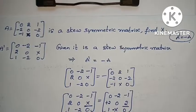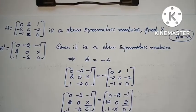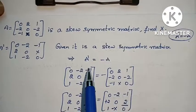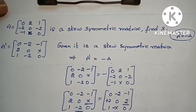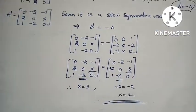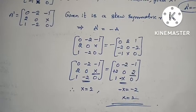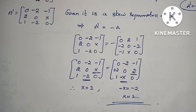Symmetric: A transpose equals A. Skew symmetric: A transpose equals minus A. This equation is very simple.